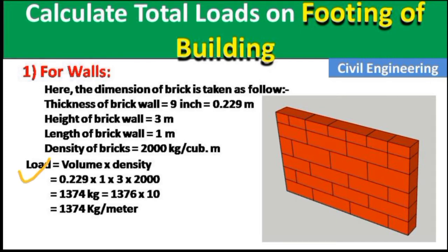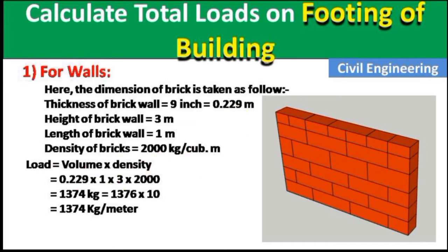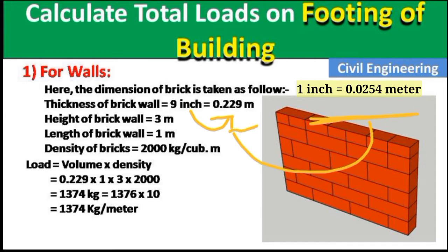The formula to calculate load is: Volume × Density. Volume = Length × Width × Height. The thickness of 9 inches is converted to 0.229 meters using the unit conversion shown. Calculating the volume and multiplying by density, we get a load of 1374 kg per meter of wall. This is not the total weight of the whole wall — it is the weight per meter length.